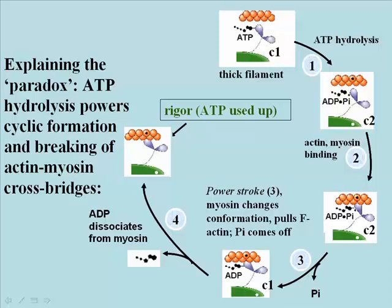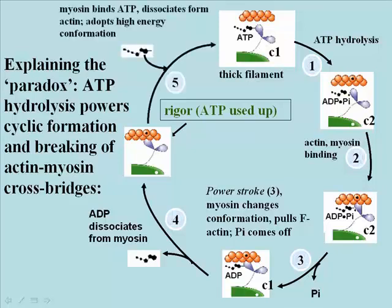In a living individual, in the living muscle, rigor does not persist. If there's ATP around, it can bind to the myosin head. Binding of ATP to the myosin head changes the conformation — again just enough — so that the myosin head becomes dissociated from the actin. So in a living muscle, in the relaxed state, ATP is always going to be associated with the myosin head before the next contraction. Think about that for a bit.